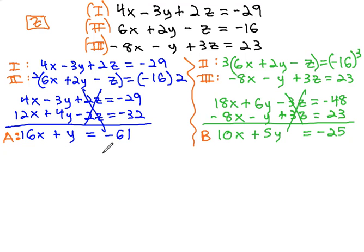We are finally ready, after eliminating z twice, to solve our A and B together as two equations with two unknowns. A is 16x plus y equals negative 61. B is 10x plus 5y equals negative 25.